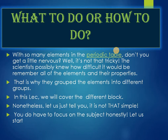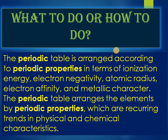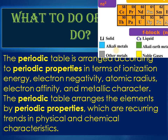Scientists grouped the elements into different groups. In this lecture we will cover the different blocks of a periodic table and their different properties. The periodic table is arranged according to periodic properties in terms of ionization energy, electronegativity, atomic radius, electron affinity, and metallic character — these are recurring trends in physical and chemical characteristics.